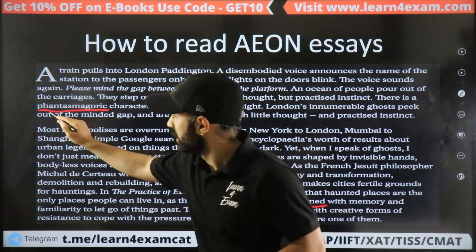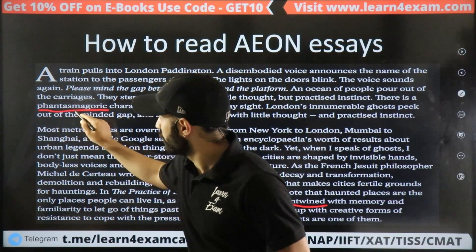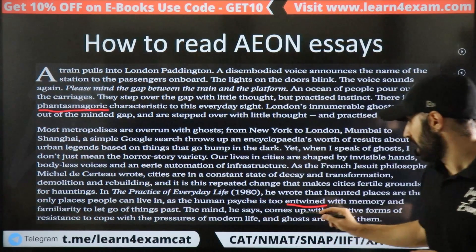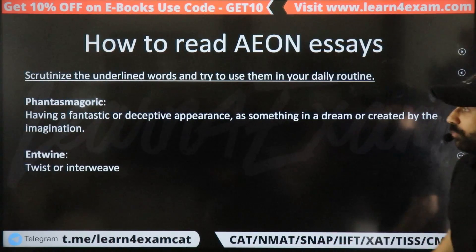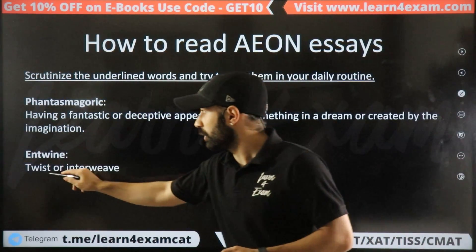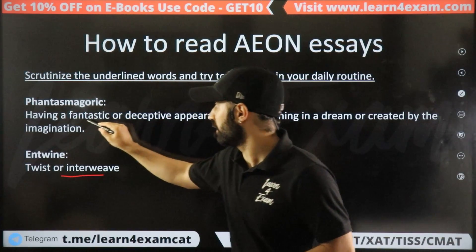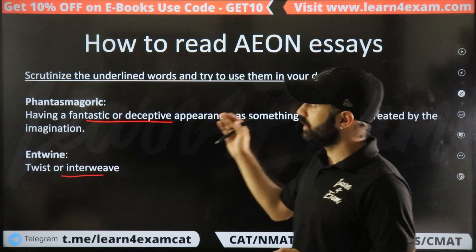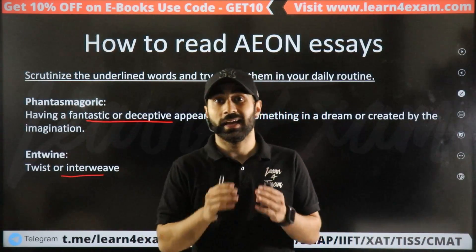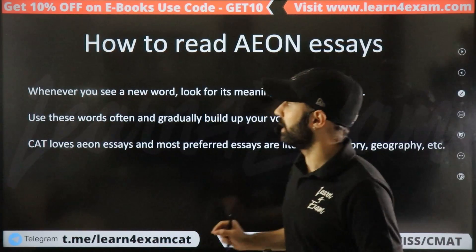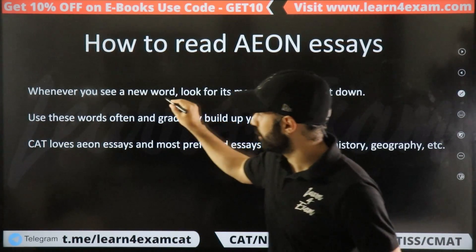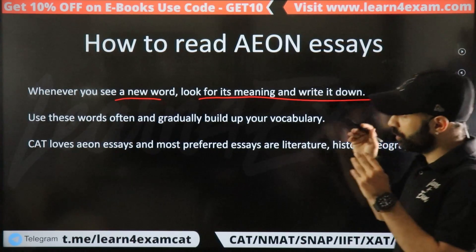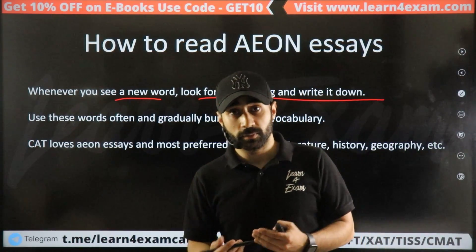If you look at it, I will find two words. This is 'Phantasmagoric' and the next word is 'Entwine.' Entwine means to twist, and Phantasmagoric means a fantastic and deceptive appearance. When you are reading and encounter a new word, you must note it down and use it.